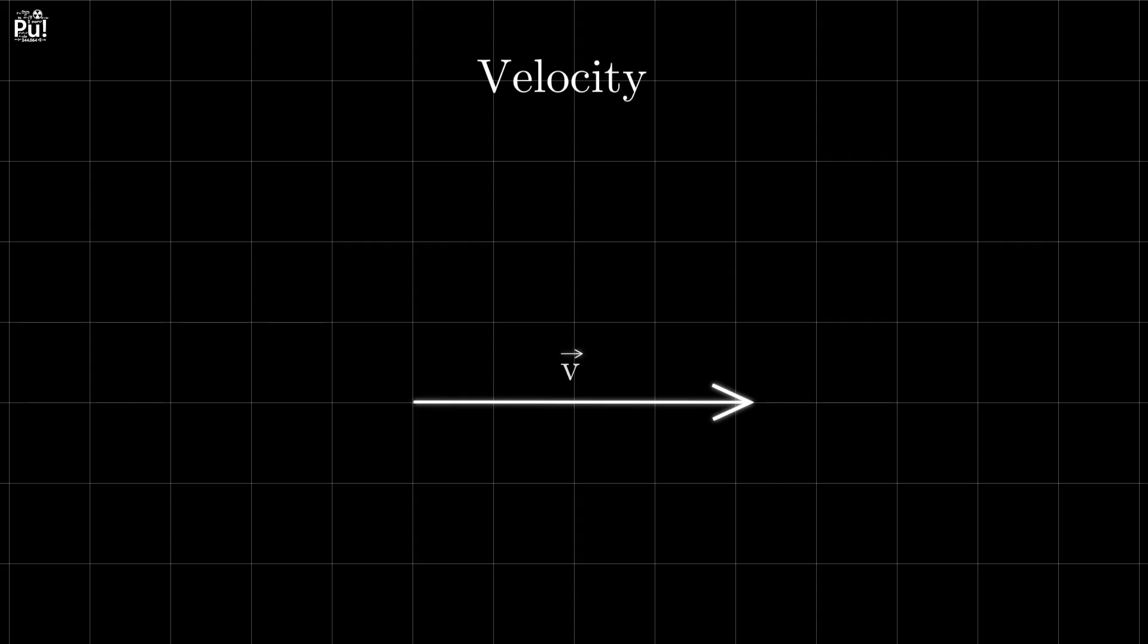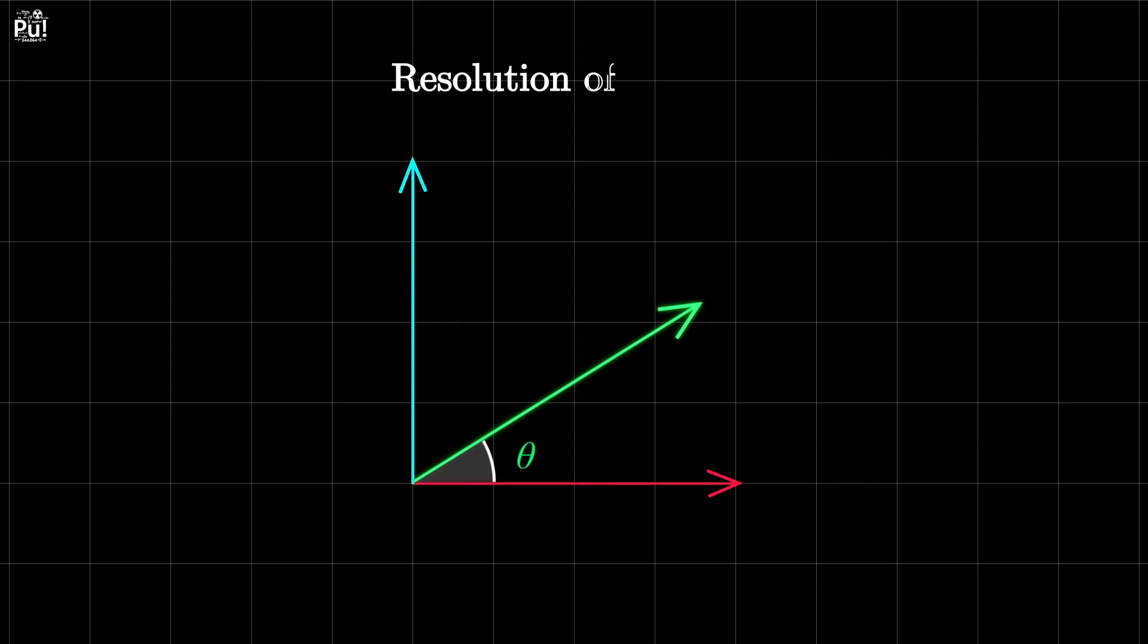This is because velocity is a vector. It has both direction and magnitude, and when that direction is slanted, we can break it into parts. This is called resolving a vector.